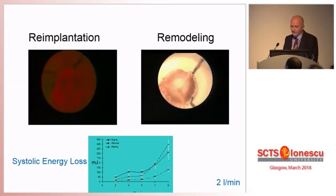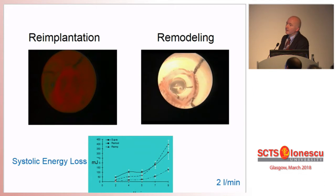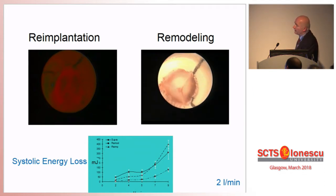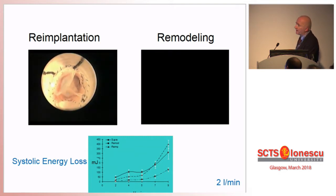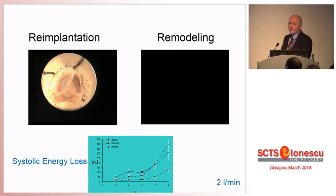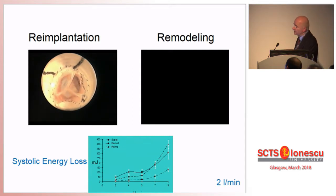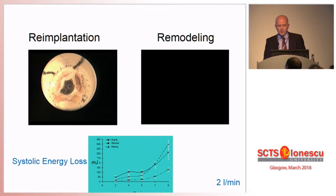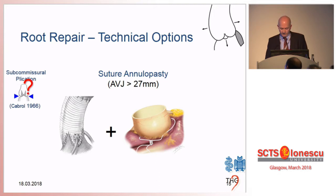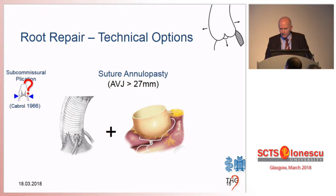In addition, there is at least a theoretical argument that root remodeling leads to more physiologic cusp motion, as opposed to re-implantation. These videos are from an in vitro study we did more than 10 years ago. So theoretically, root remodeling should result in more physiologic cusp motion, and of course root remodeling can be combined with an annuloplasty.